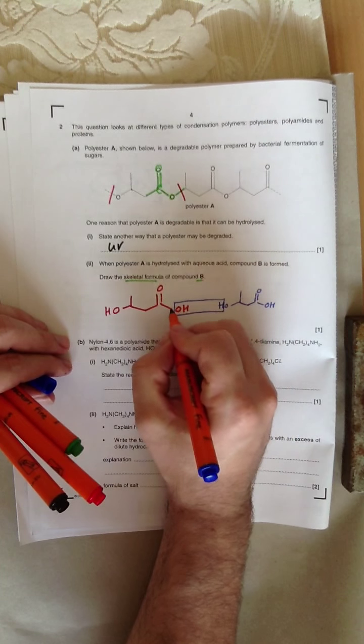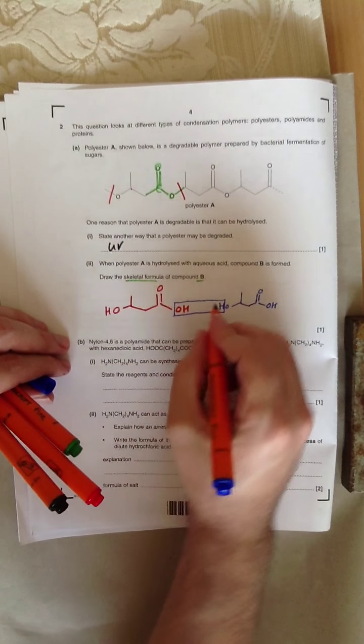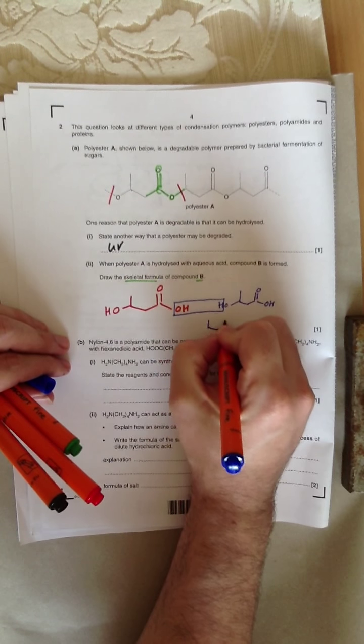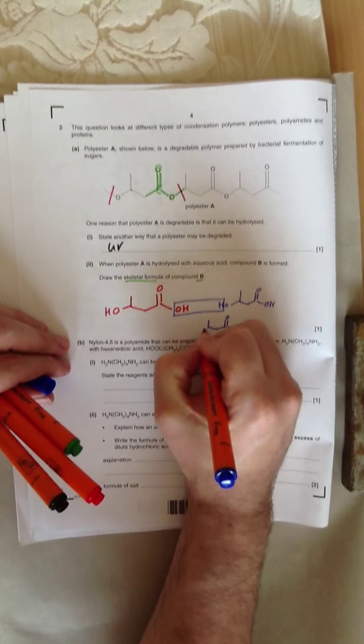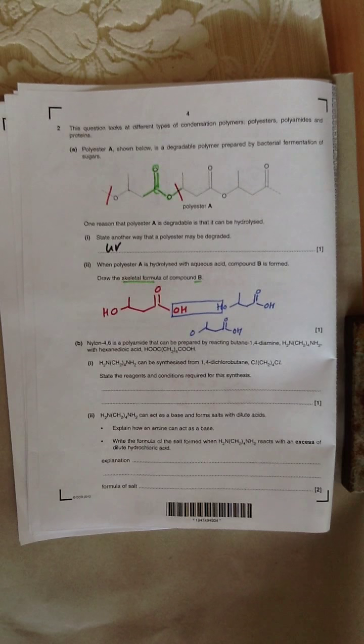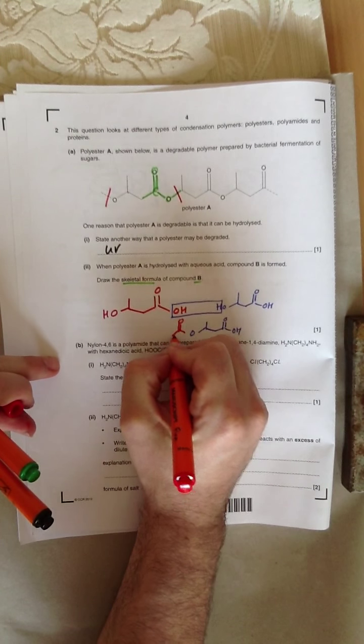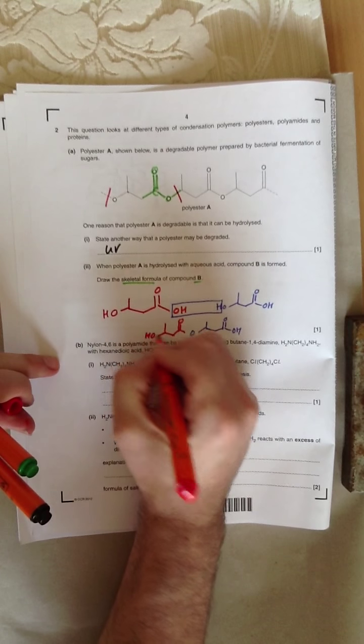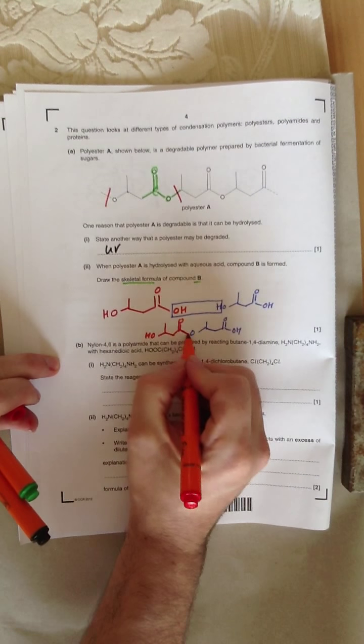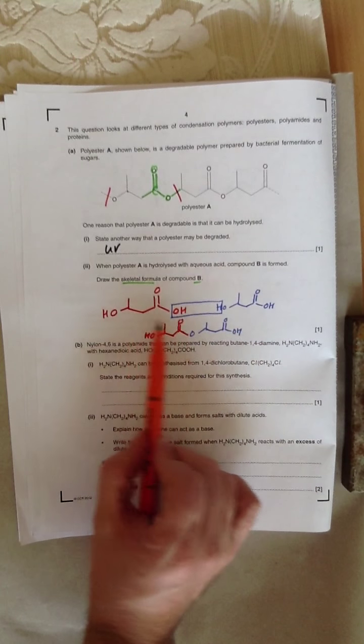That oxygen would connect onto that group there, and you'd end up with this molecule, oxygen, up to this. So you'd end up with that molecule, and that molecule could then add more and more of itself on until you've got the polymer.